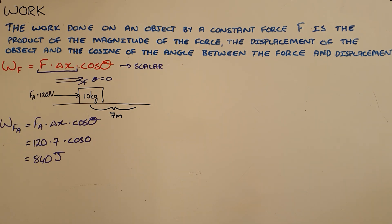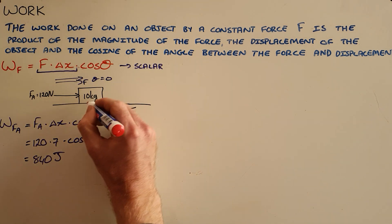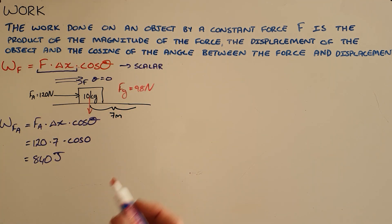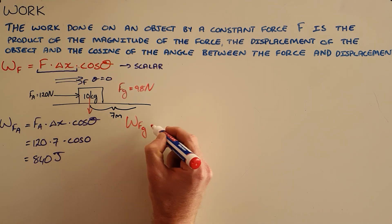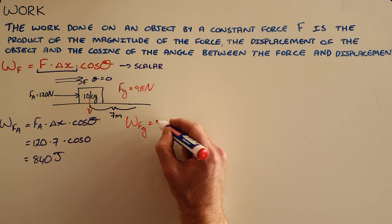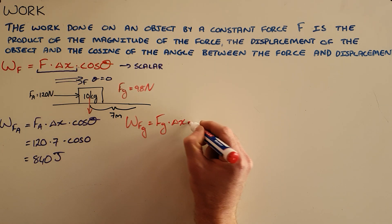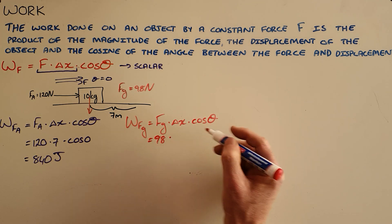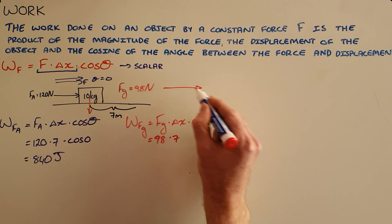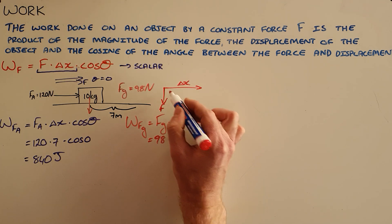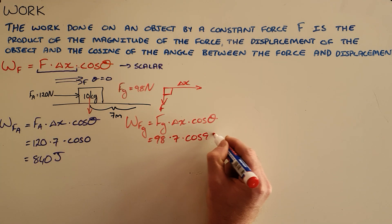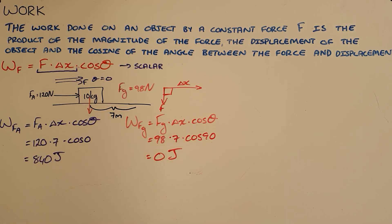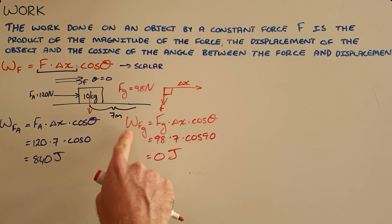Where this becomes complicated is that while this is happening, there is also a force of gravity acting on this object — 98 newtons pulling it downward. To demonstrate that gravity is doing no work scientifically: the work done by gravity equals 98 newtons times seven meters times the cosine of the angle between them. The displacement is to the right but the force is downward, making the angle 90 degrees, so the work done by gravity is zero joules.